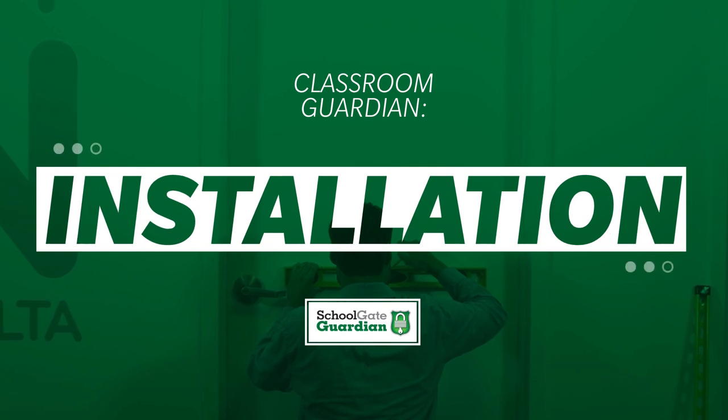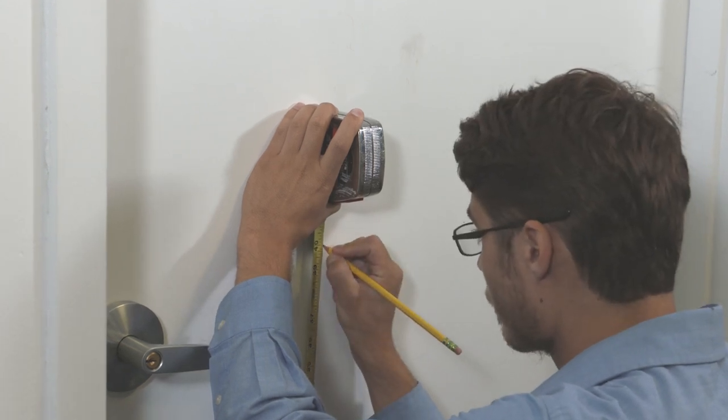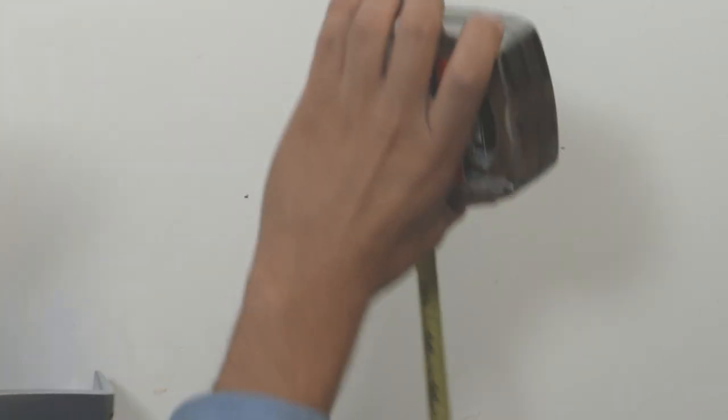Welcome to the Classroom Guardian installation video. To start, measure the height for the Classroom Guardian. It should be mounted between 24 inches and 44 inches from the floor to meet ADA compliance.